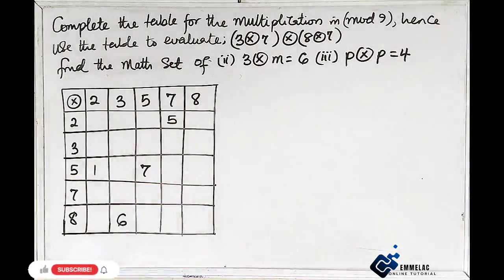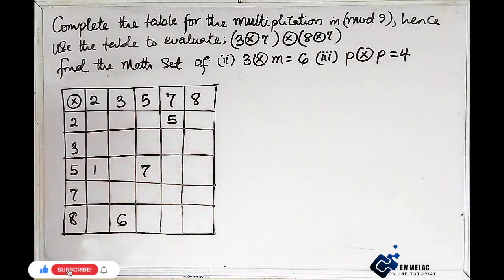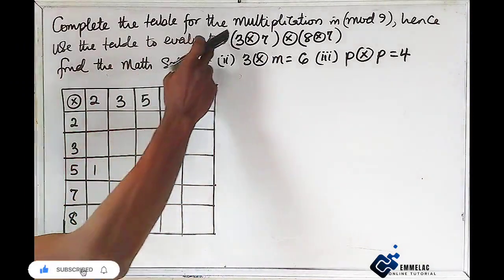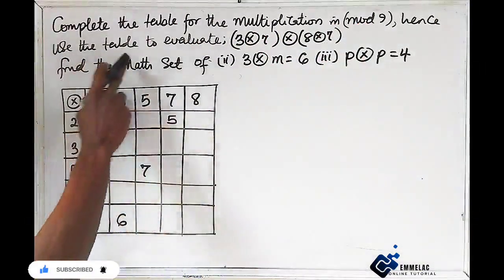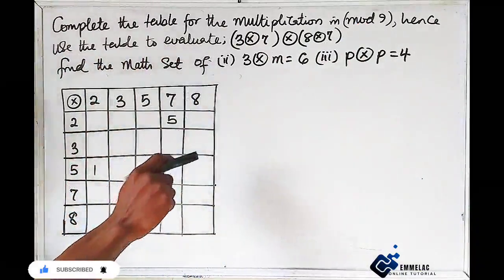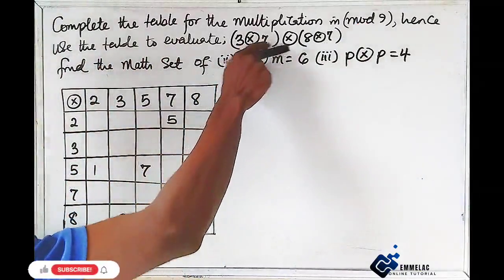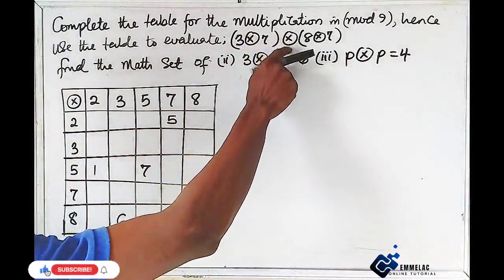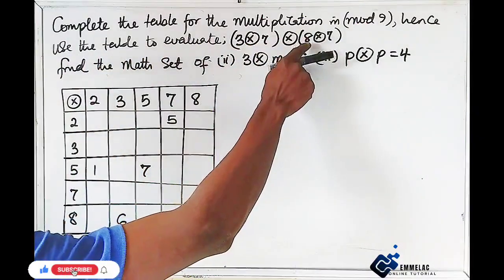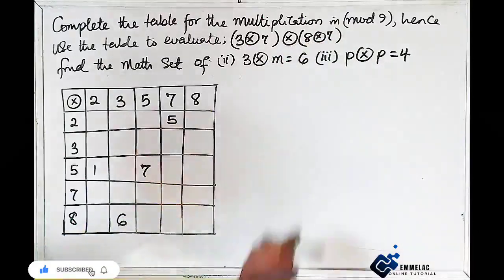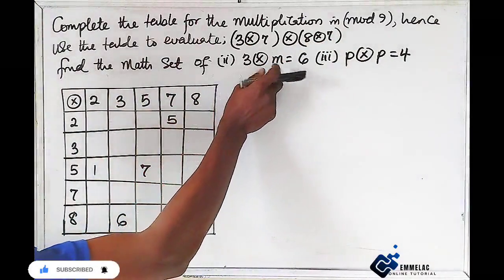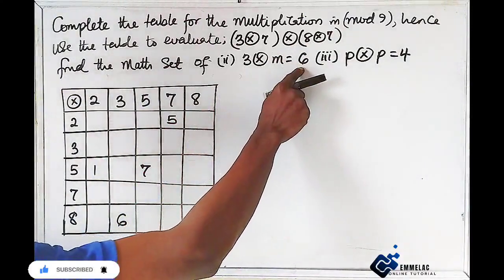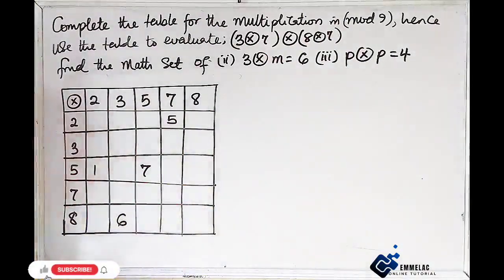Welcome to this online tutorial. The question is in modular arithmetic and asks us to complete the table for multiplication in mod 9. We then use the table to evaluate (3×7)×(8×7), find the set of m where 3×m = 6, and find p where p×p = 4.